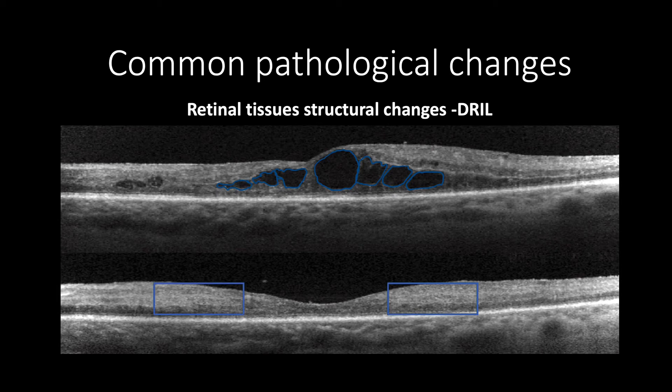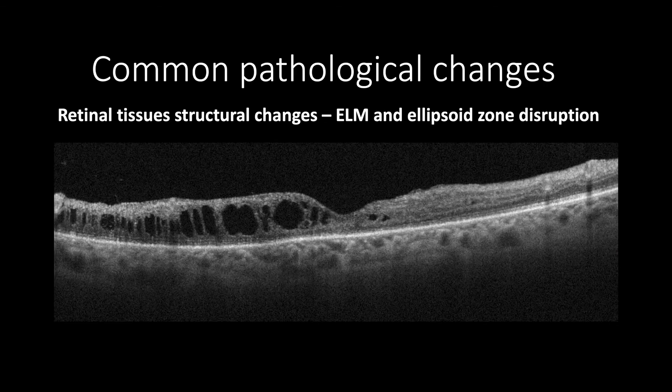The loss or disruption of the external limiting membrane or ellipsoid zone can cause permanent visual loss, and it is an independent visual prognostic factor from the disorganization of the inner retinal layer.